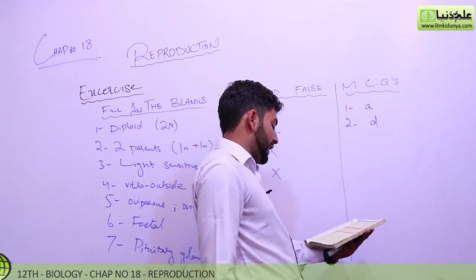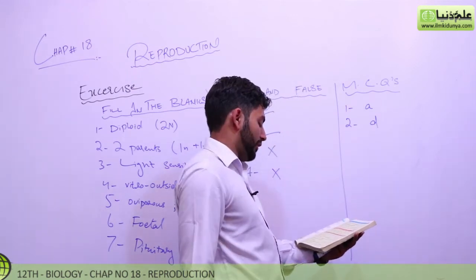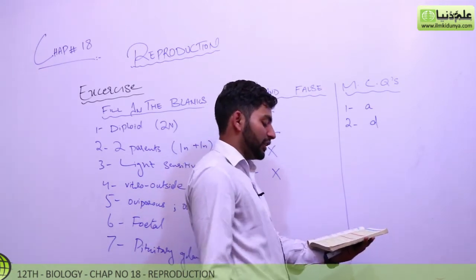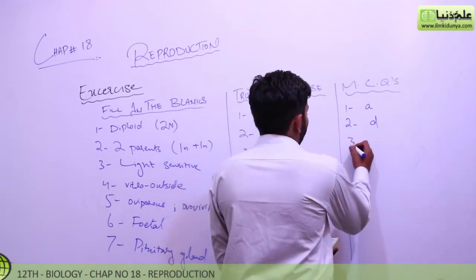Then he asks, developing seeds are a rich source of auxin, cytokinins, gibberellins, or all A, B, and C. So developing seeds, these three you get, and then the answer is D.